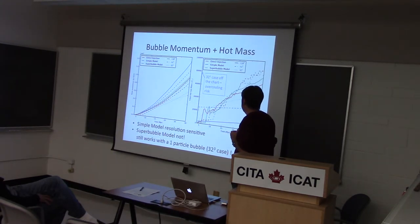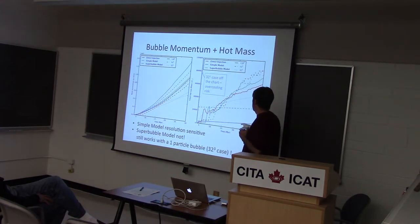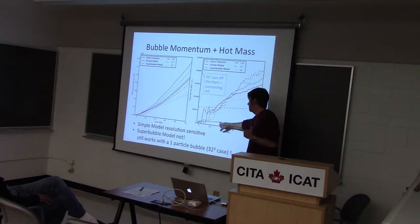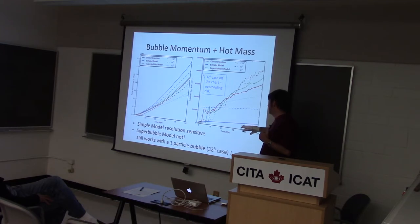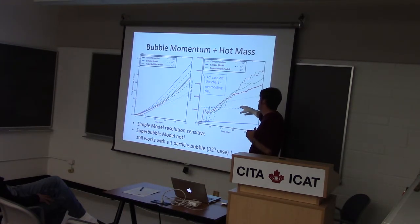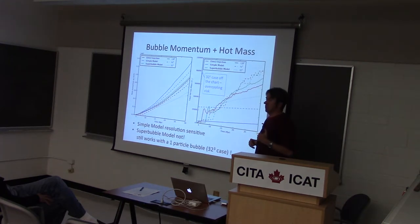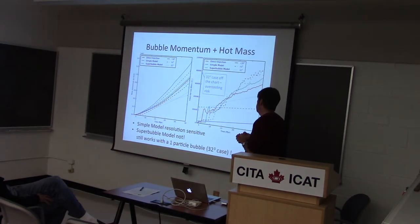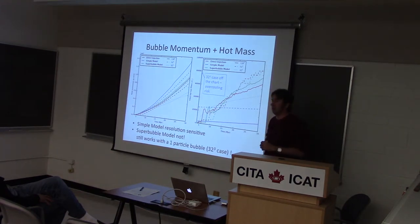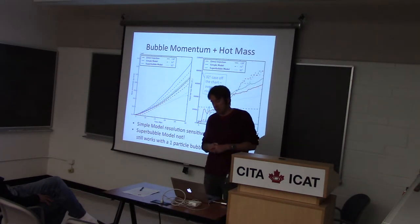Where things really change is the hot gas mass. In the simple model where you just dump it into a resolution element, it just stays the same — when you have high resolution it goes into this much mass, and when you multiply the resolution by eight, it goes into much more mass, which is off the chart. So the hot mass you get is incredibly sensitive to resolution in the typical standard model that people are using. Whereas in our models, it's become fairly self-consistent. It's not perfectly converged, but it's a lot better than the highly resolution-dependent results that other people were getting.